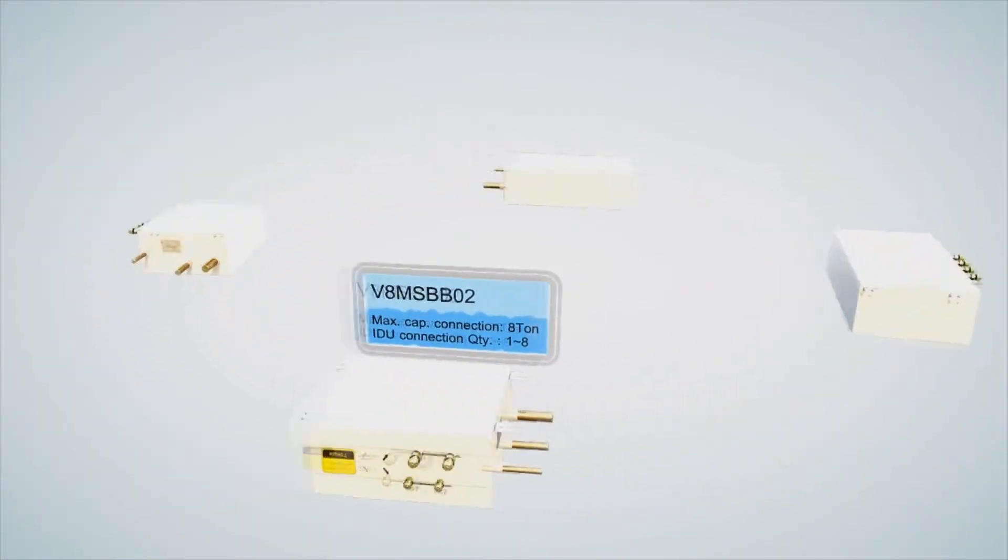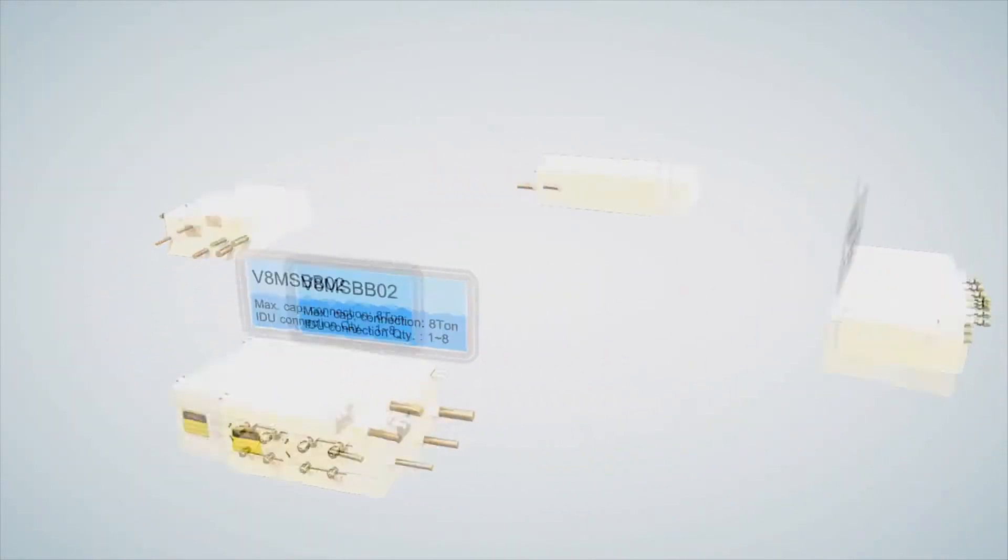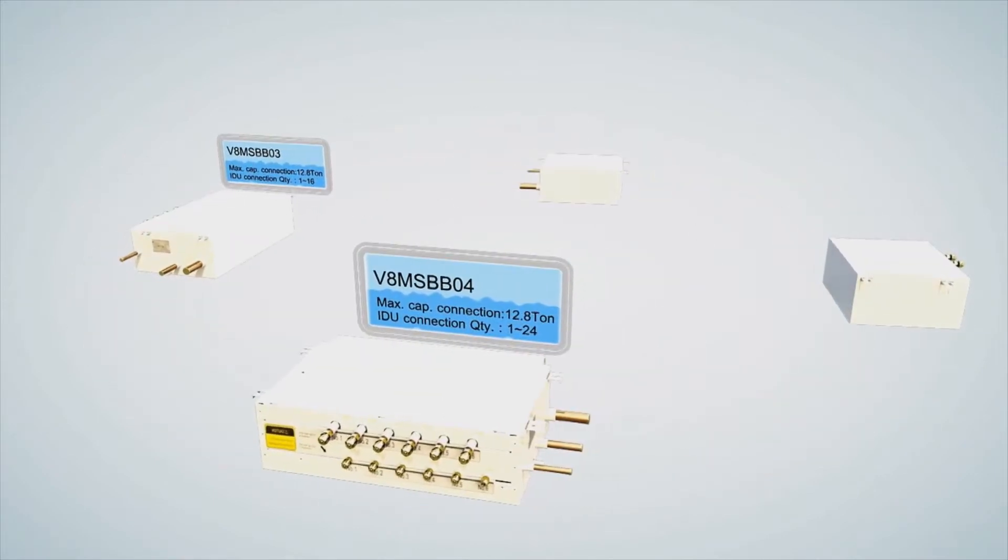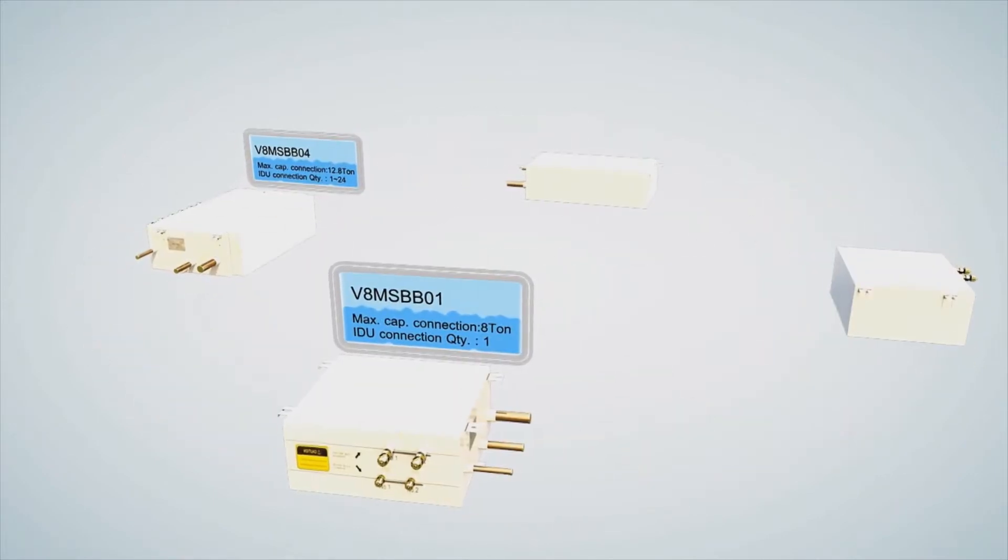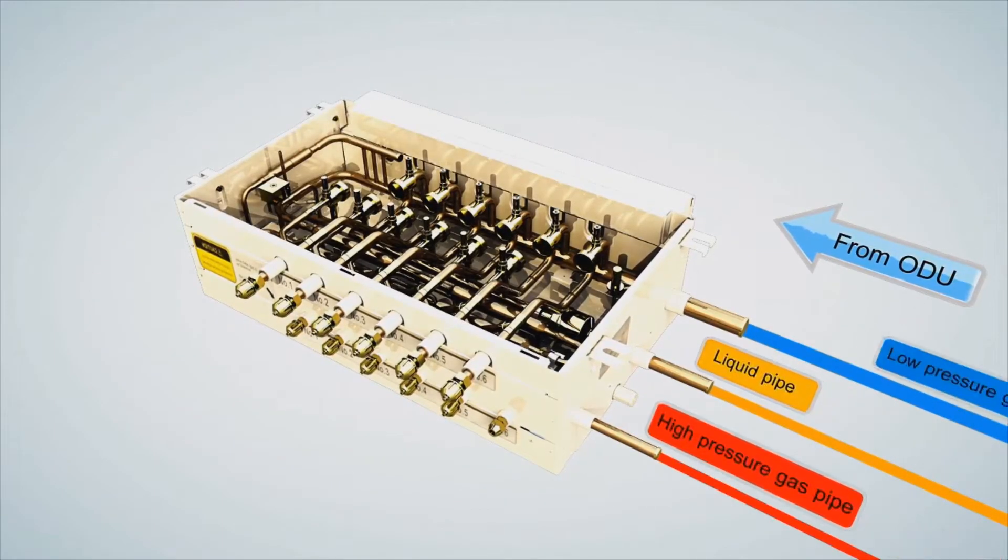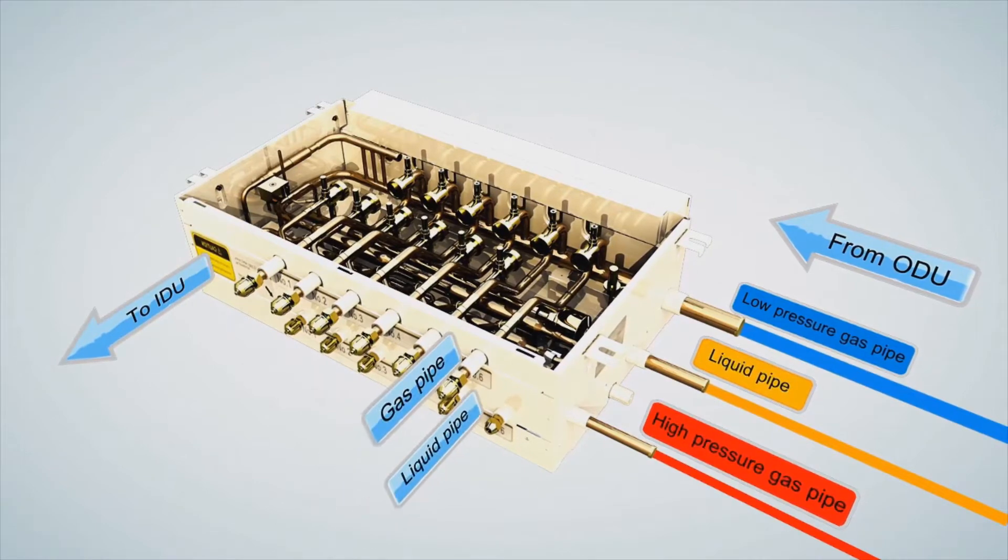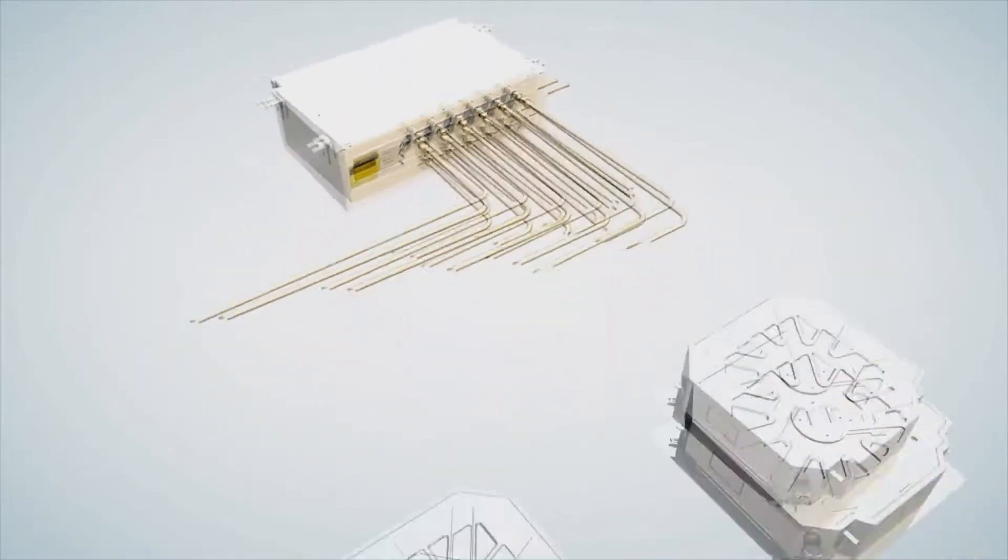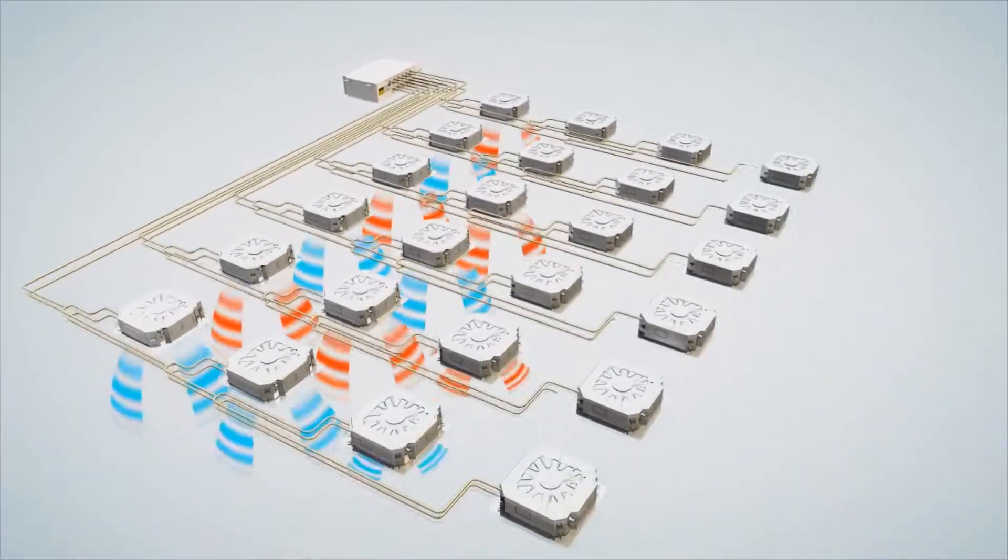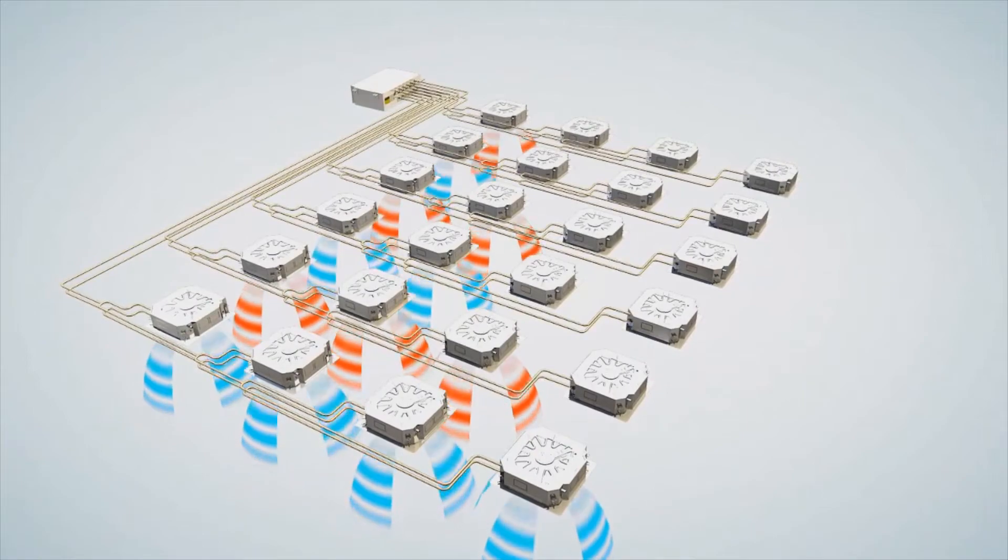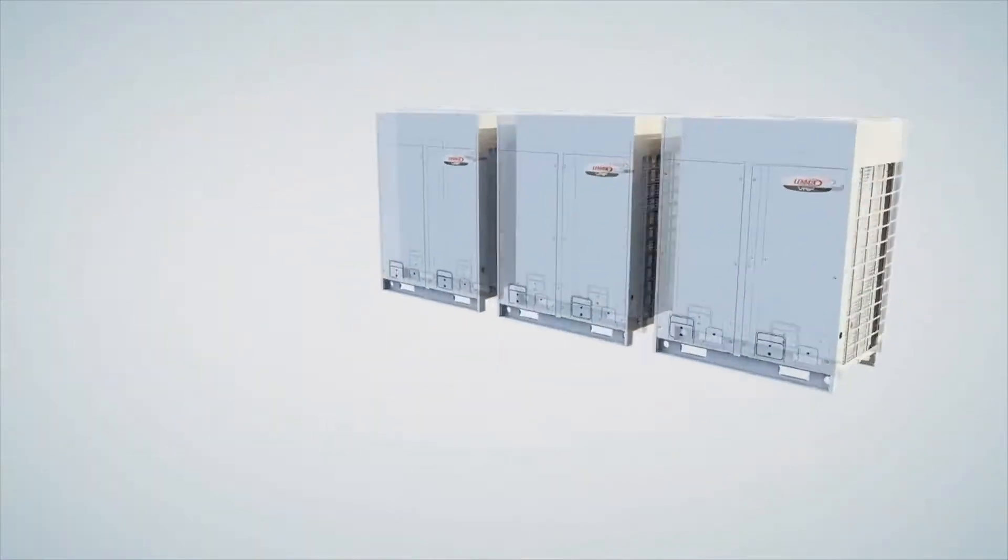The key to heat recovery operation is the mode selection box or MS box. There are four different sizes of MS boxes offering flexible installation configurations in 1, 2, 4 and 6 port models. Each MS box port can provide heating or cooling independently. Up to four indoor units can be connected to each port allowing the highest capacity MS box to serve up to 24 indoor units for greater installation flexibility.